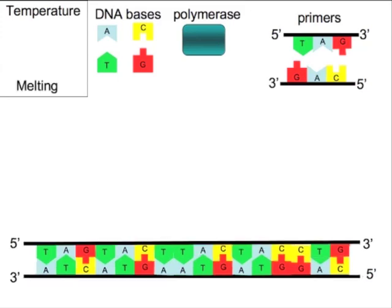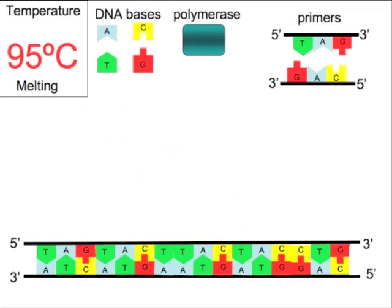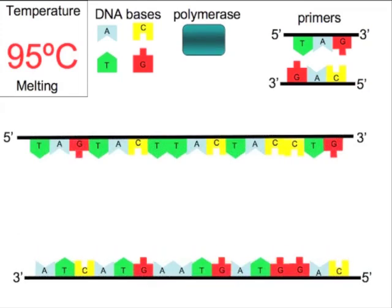Now we're going to enter the first step which is called melting. We've now raised the temperature to 95 degrees C which is just under the boiling point for water. This breaks apart the hydrogen bonds which hold the DNA strand together to give us two separate complementary strands of DNA.